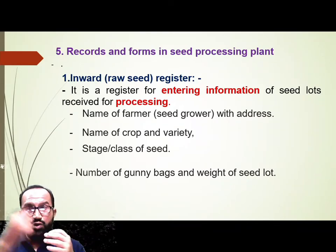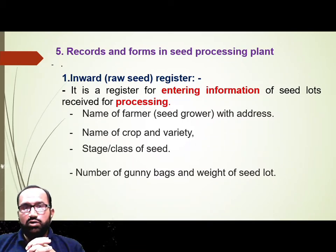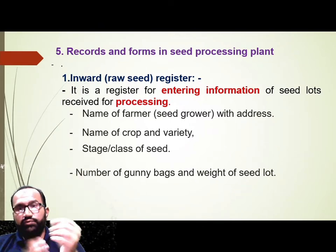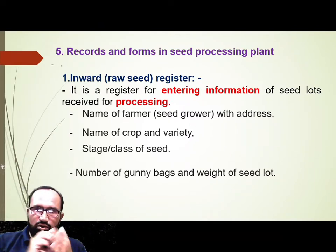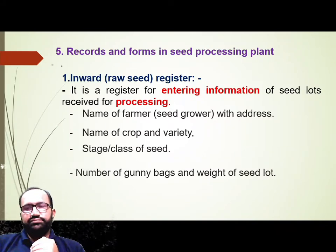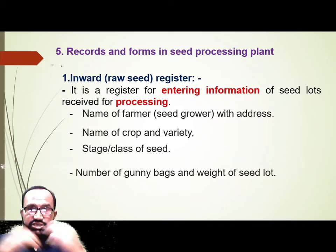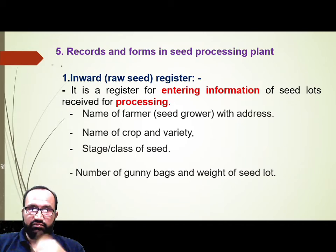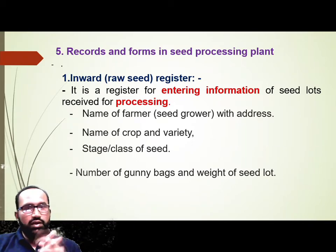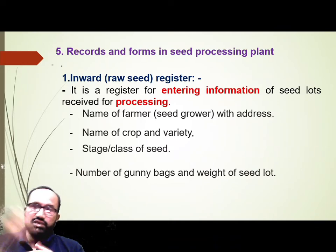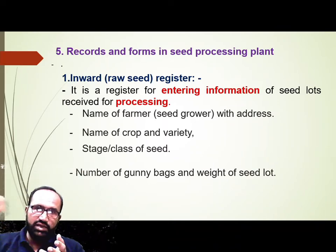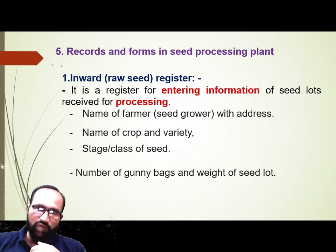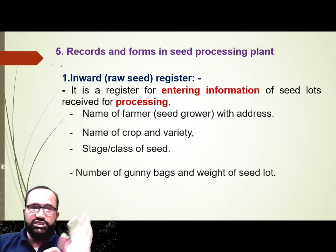When seed is collected from a seed plot, it is given a lot number. The columns in the register include: Name of Farmer / Seed Grower with complete address. Also included is the name of the crop and variety — which crop it is, whether it is wheat or maize, and which variety — such as Kalyan Sona, or Malvika — that is mentioned.